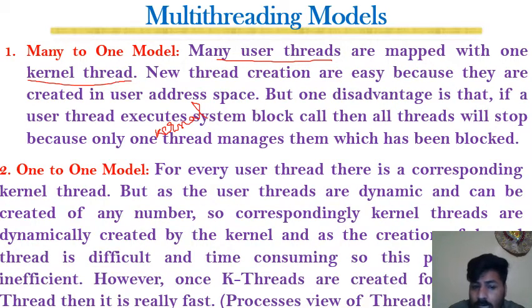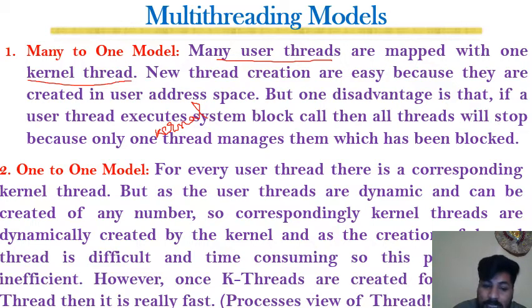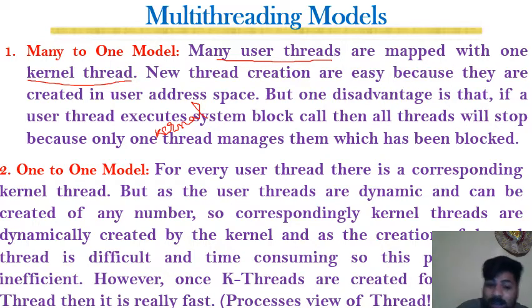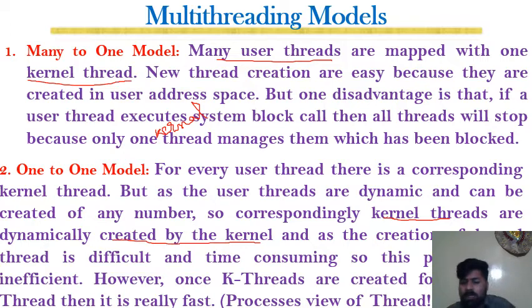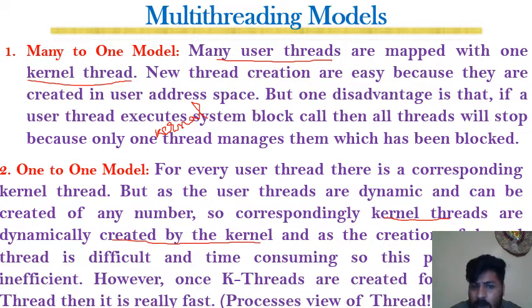The one-to-one model means that for every user thread there is a corresponding kernel thread. Since user threads are dynamic and can be created in any number — in languages like C#, Java, or Python — the operating system must create a corresponding kernel thread for each one. However, since kernel thread creation is difficult and time-consuming, this model is less efficient. Once kernel threads are created for user threads, they can be managed quickly.